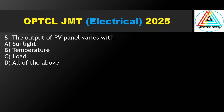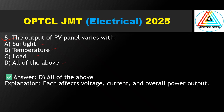Question No. 8: The output of a PV panel varies with — sunlight, temperature, load, or all of the above? The correct answer is option D, all of the above. Each factor affects voltage, current, and overall power output. Sunlight, temperature, and load all affect PV panel output.